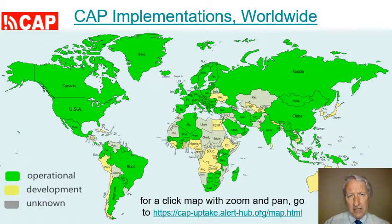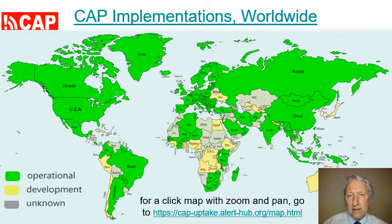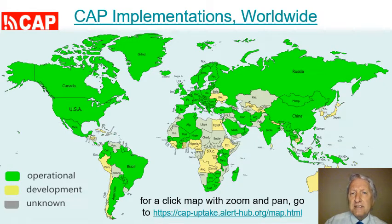Today, about 90 percent of the world's population lives in a country with at least one national CAP newsfeed operating or in testing. Those show as green and yellow on this map. The countries in gray haven't even begun to implement CAP as far as I know. A large percentage of these are developing countries.